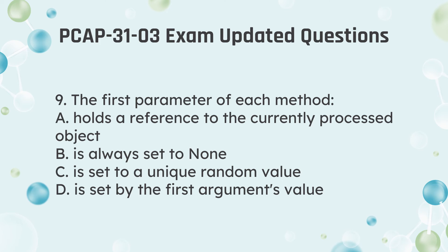Question 9: The first parameter of each method — a. Holds a reference to the currently processed object. b. Is always set to none. c. Is set to a unique random value. d. Is set by the first argument's value.